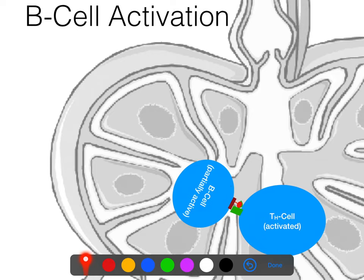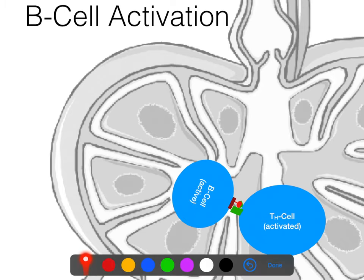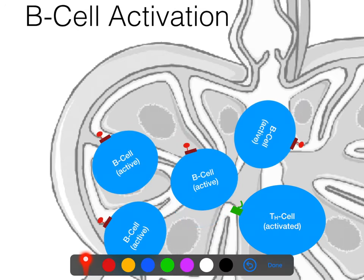When the B-cell matches up with the helper T-cell — when the antigen it is displaying matches up with the antigen cleft, and the MHC2 matches up with the CD4 portion — then the helper T-cell will begin secreting cytokines, mostly interleukins in this case. Those interleukins are released and travel across to the B-cell, providing it with the second key. So now this B-cell is going to become fully and truly active.